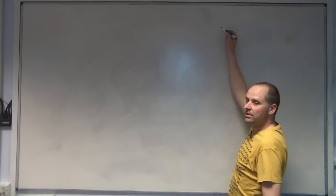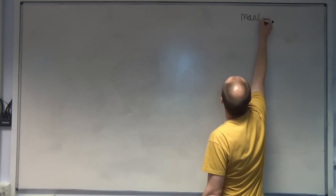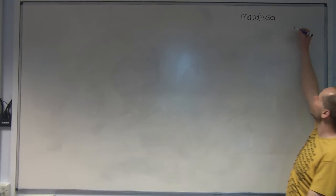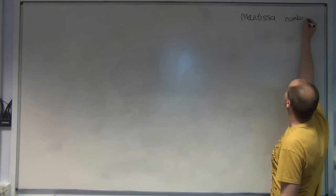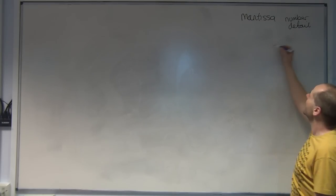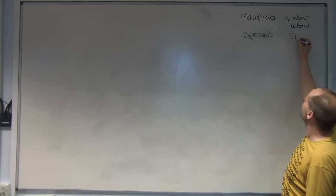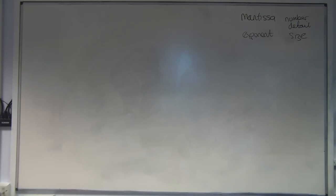Right, floating point. They will, in general, always use two's complement for the mantissa and the exponent. The mantissa is the value of the number, the detail of it. So that is the number detail. And the exponent is the size of it. But they're in two's complement.